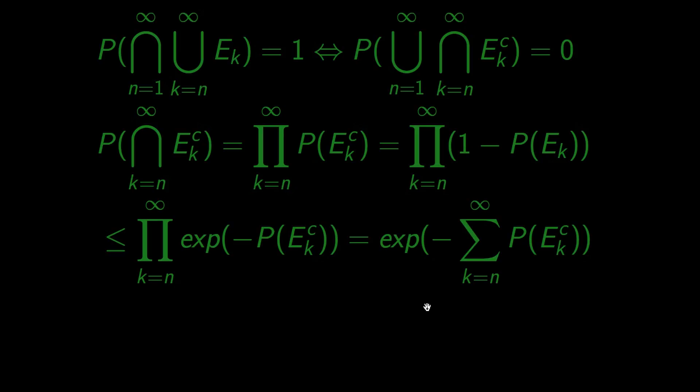Under our second assumption that the series is divergent, this quantity will be going to minus infinity, at which point the exponent is zero.